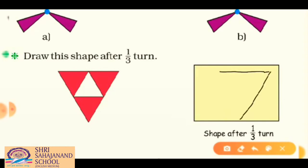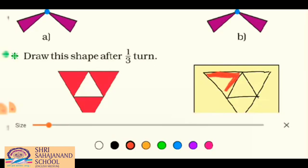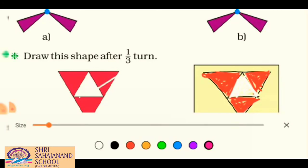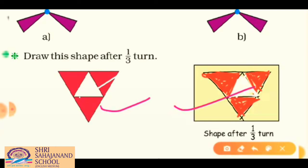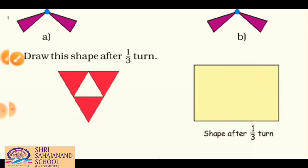Drawing the one third turn: first the outer triangular shape, then the small inner triangle. Coloring the outer part red and the inner triangle white. After one third turn, the picture looks the same — it is symmetric in one third turn.